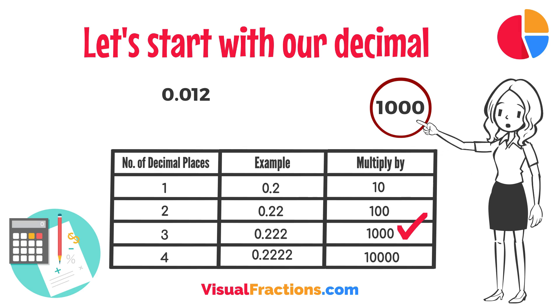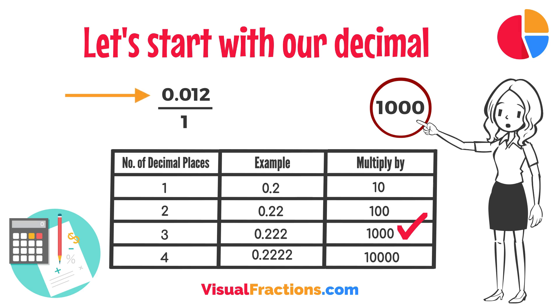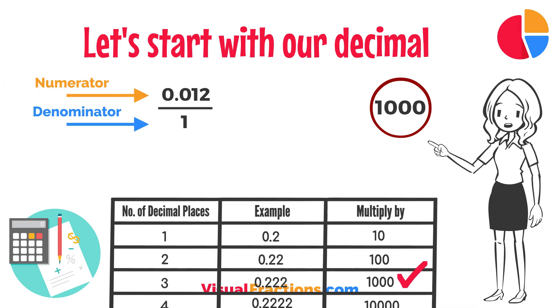To convert this decimal into a fraction, you initially put 0.012 over 1, essentially treating the decimal as the numerator in a fraction where the denominator is 1.